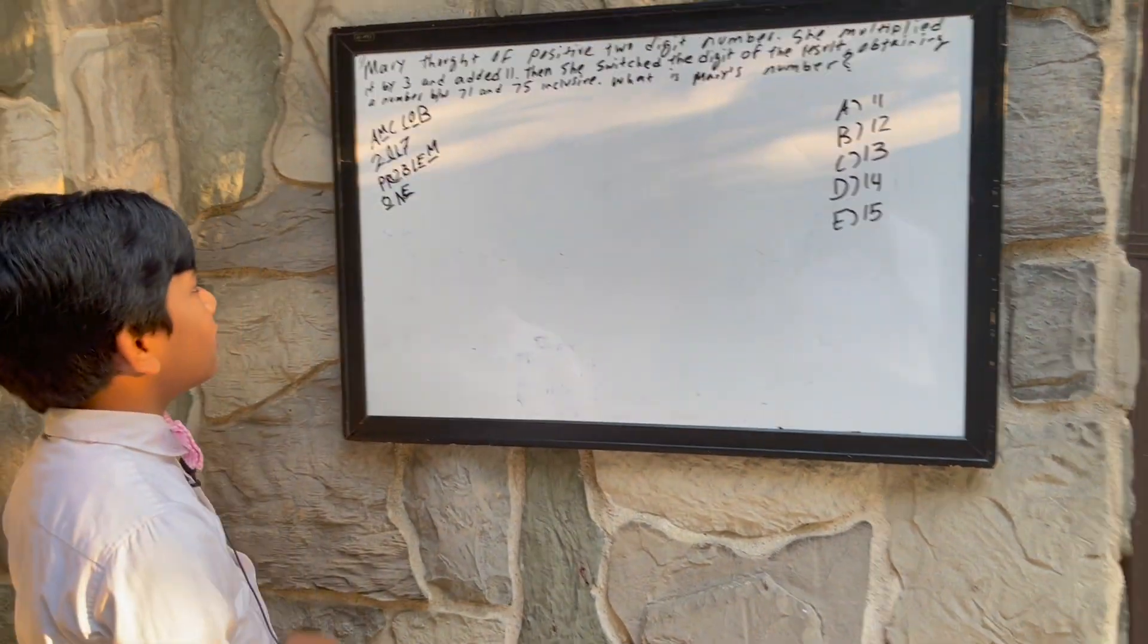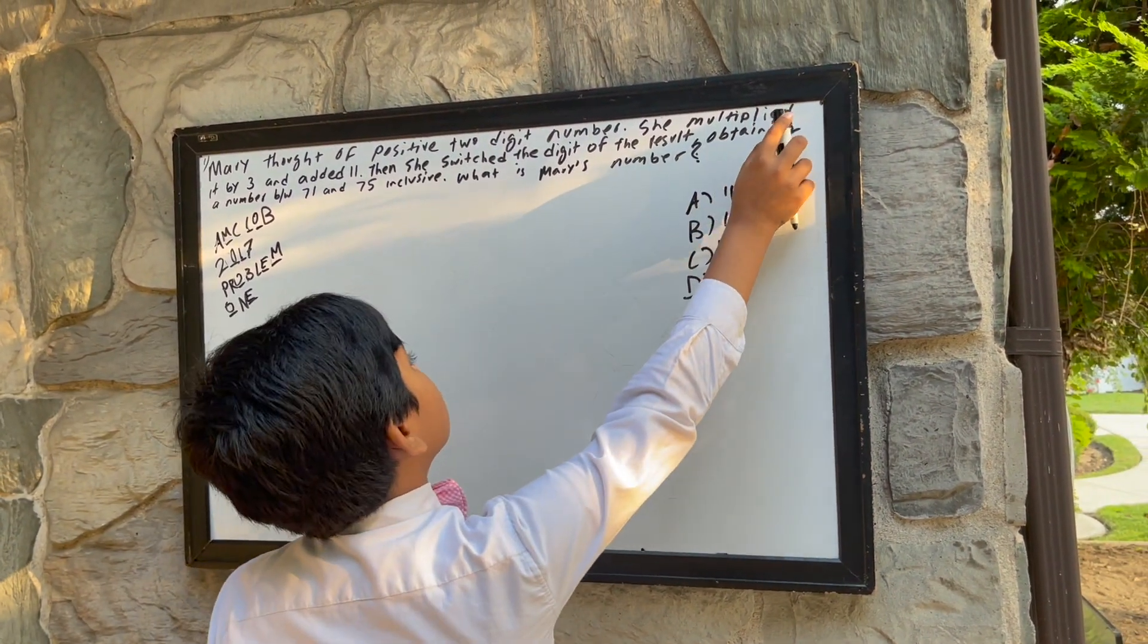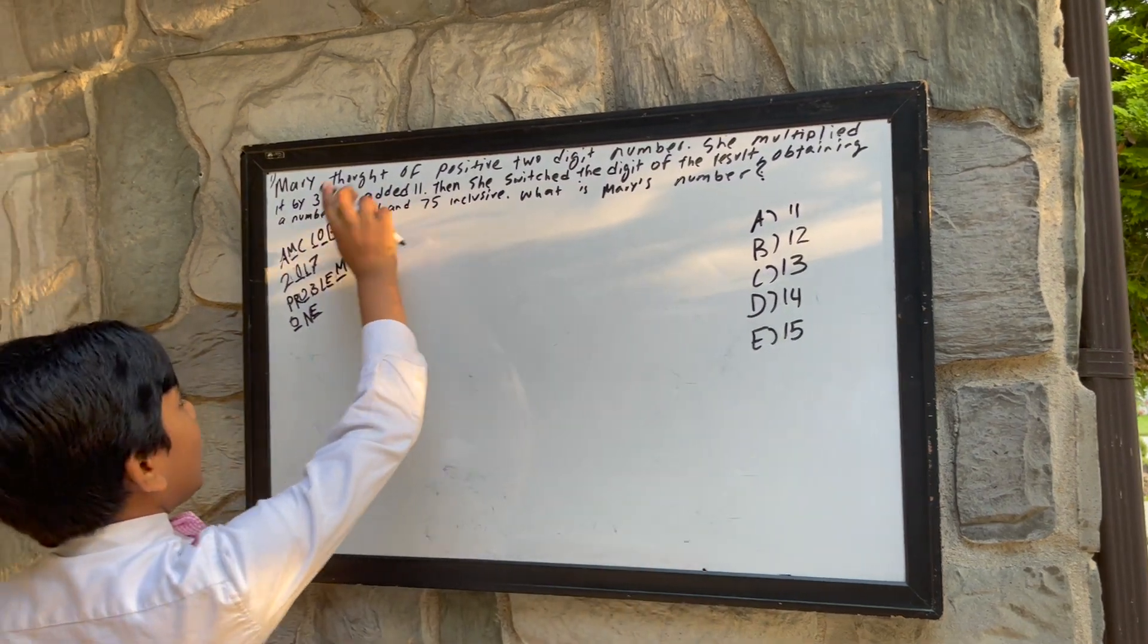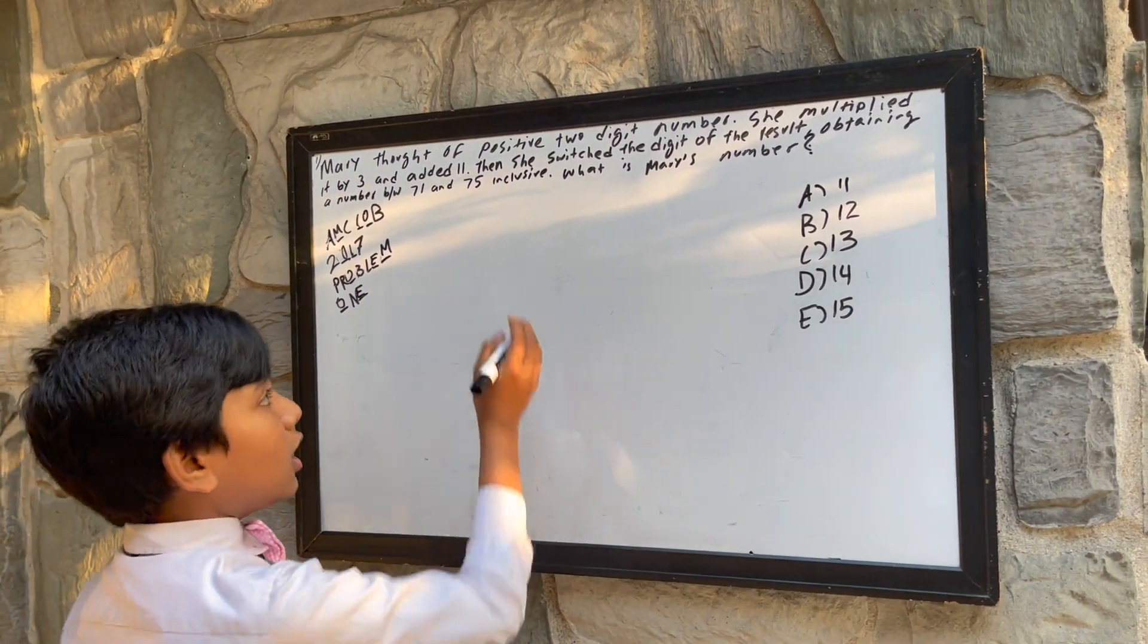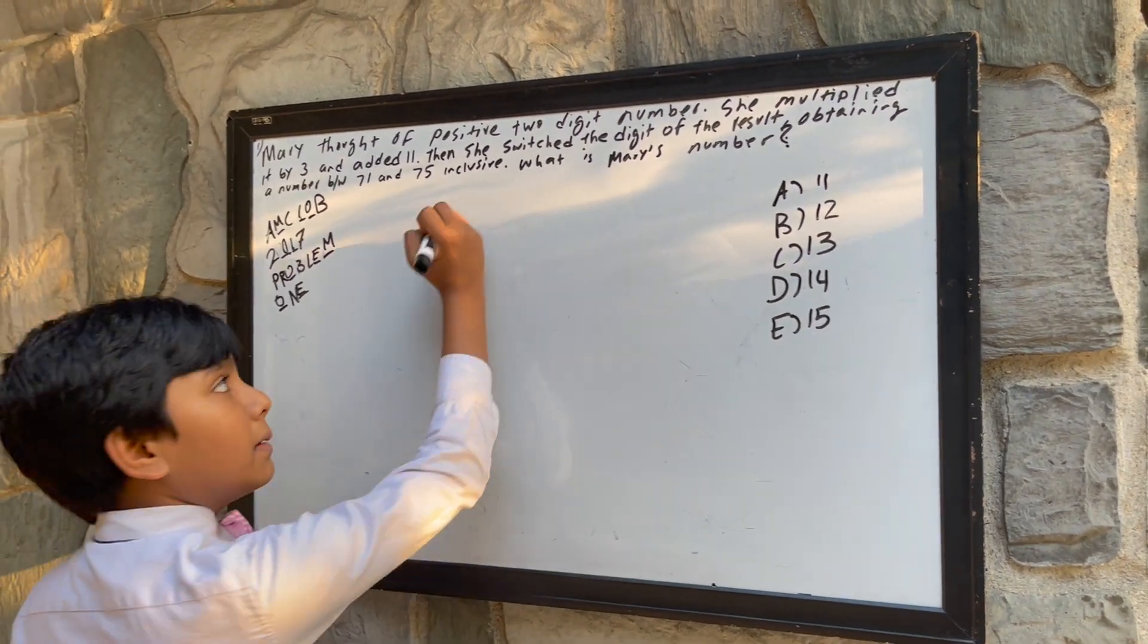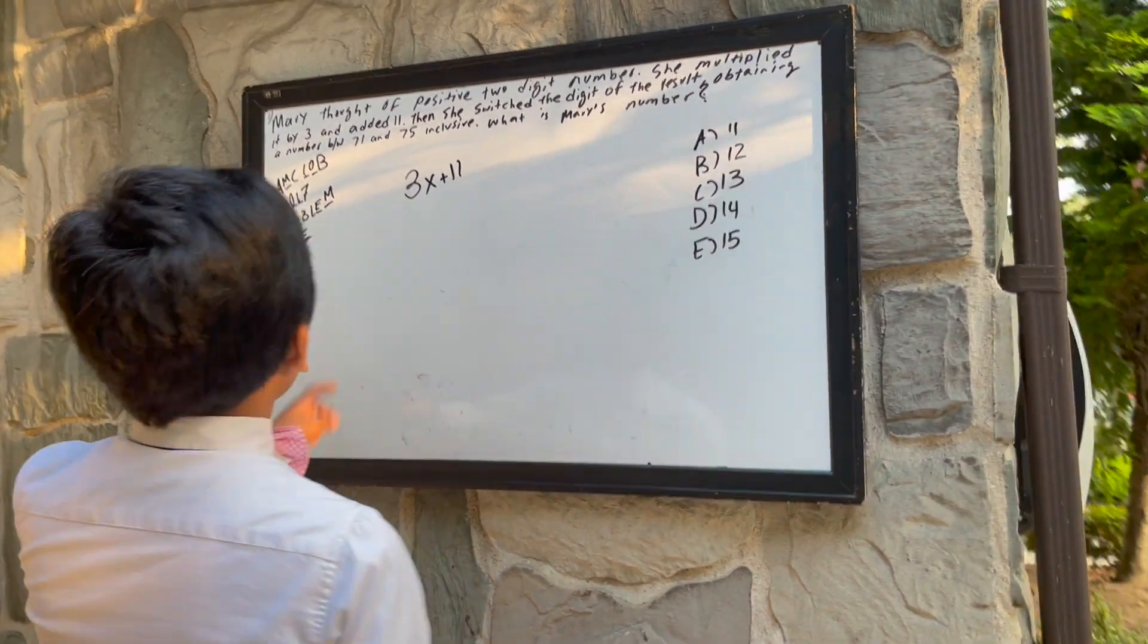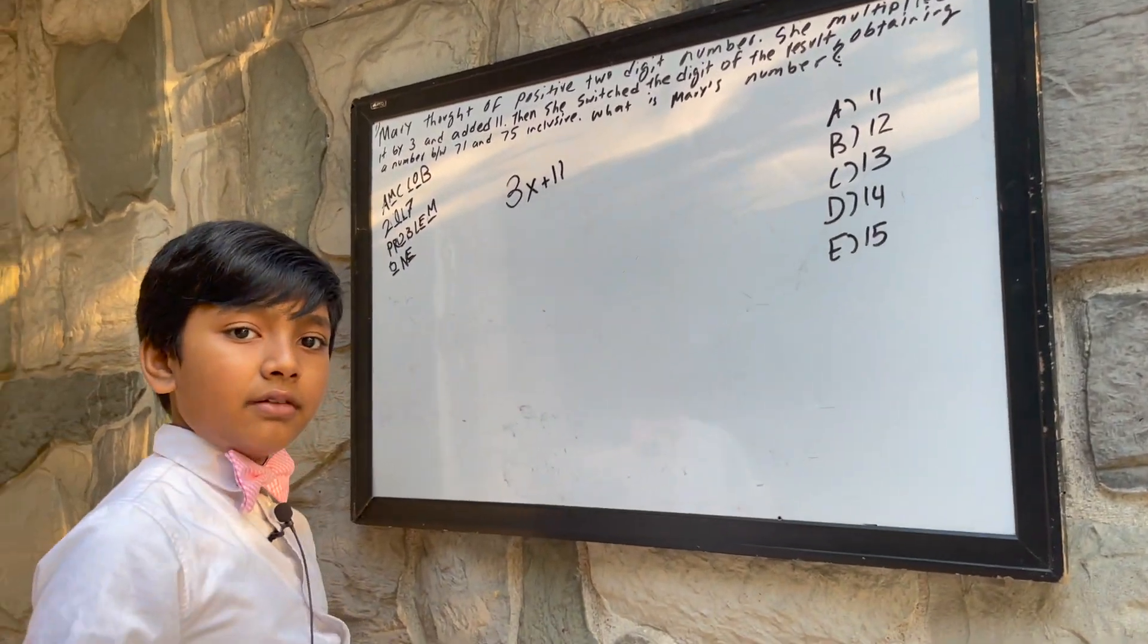What is it? Well, first of all, we're taking the number, multiplying it by 3, and adding 11. So that expression would be 3x plus 11. And then she switched the digits of the result, obtaining a number between 71 and 75, inclusive.